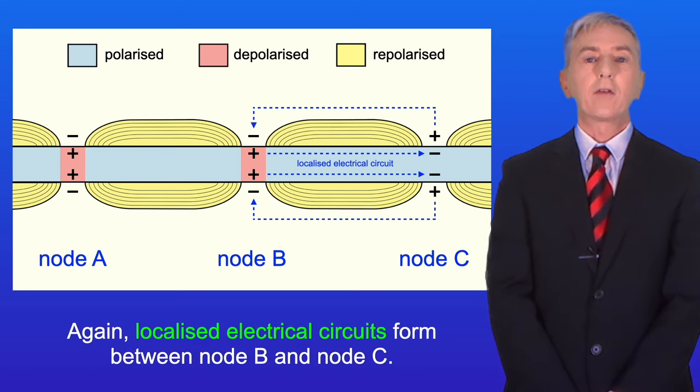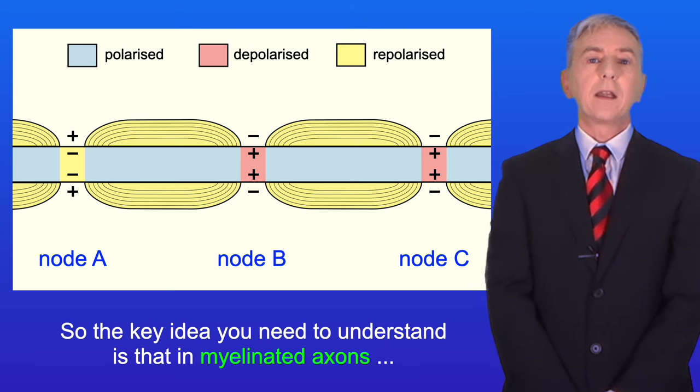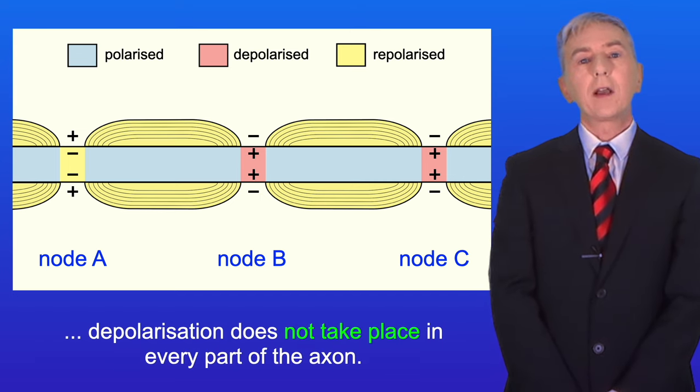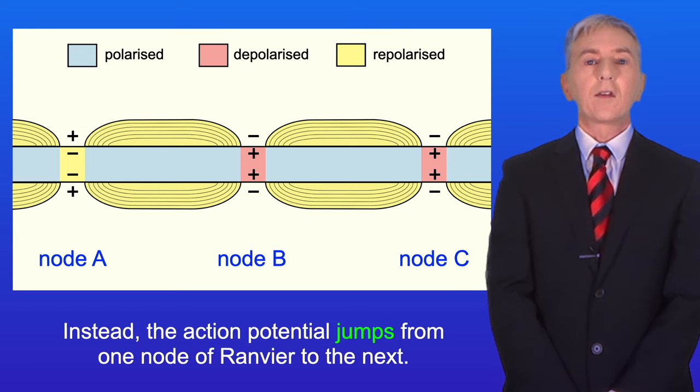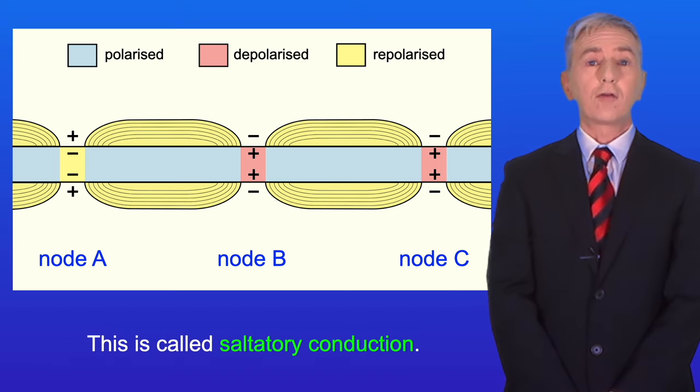Again localized electrical circuits form between node B and node C, and this triggers node C to depolarize. So the key idea you need to understand is that in myelinated axons depolarization does not take place in every part of the axon. Instead the action potential jumps from one node of Ranvier to the next. This is called saltatory conduction.